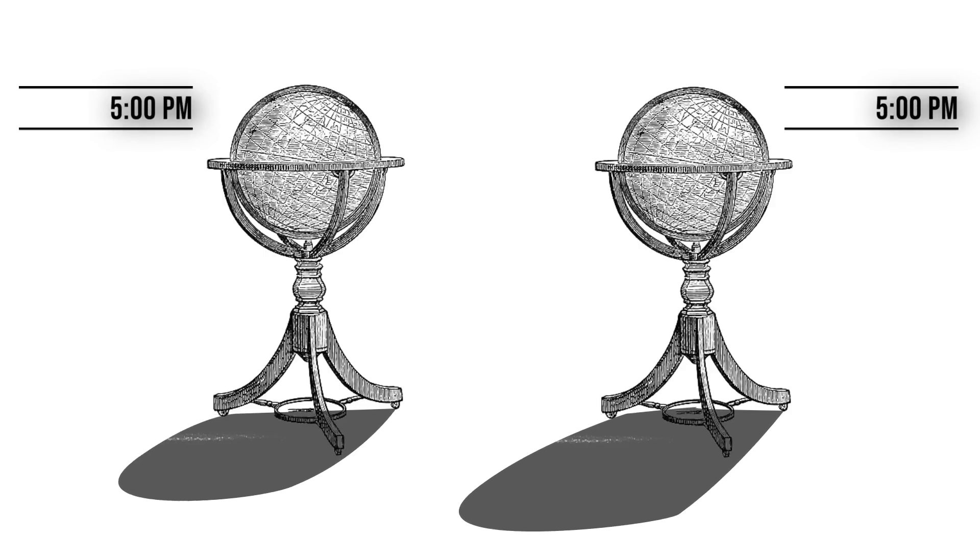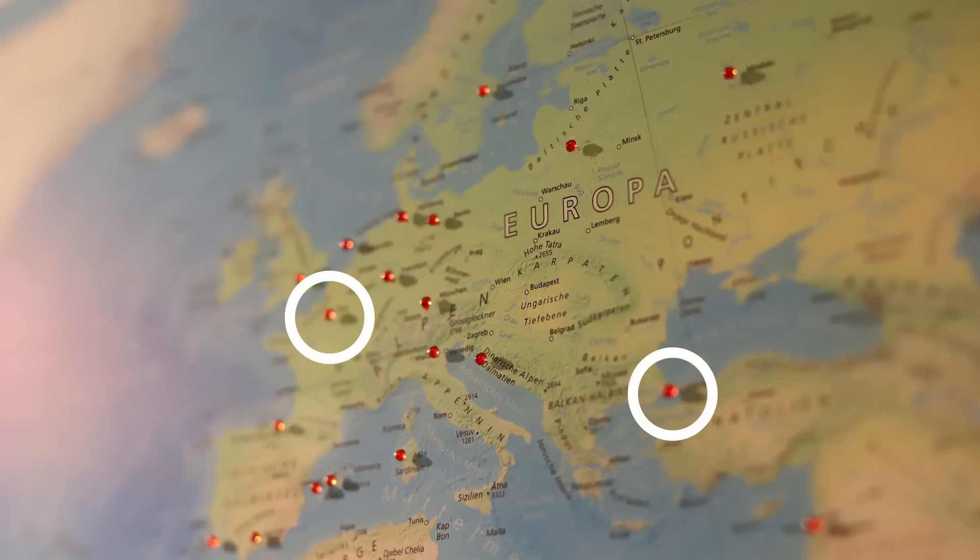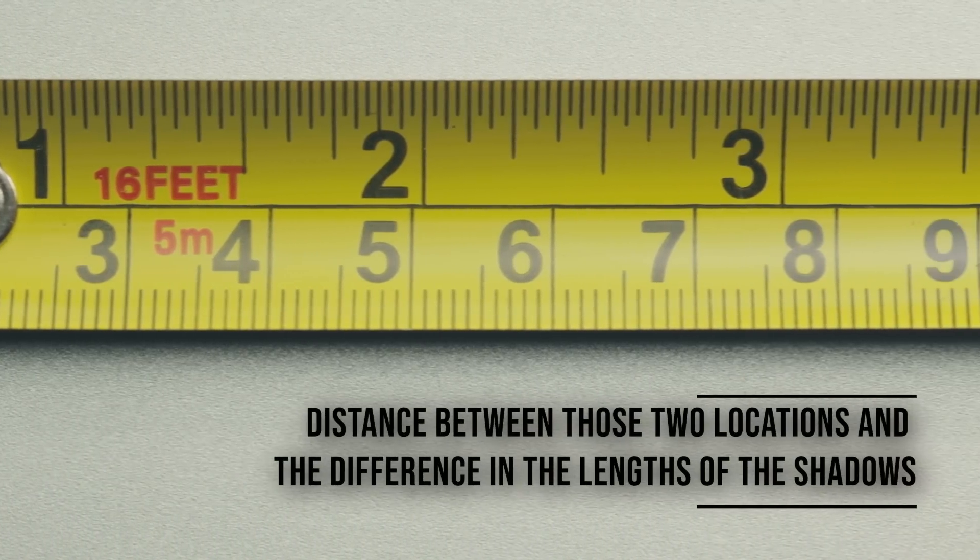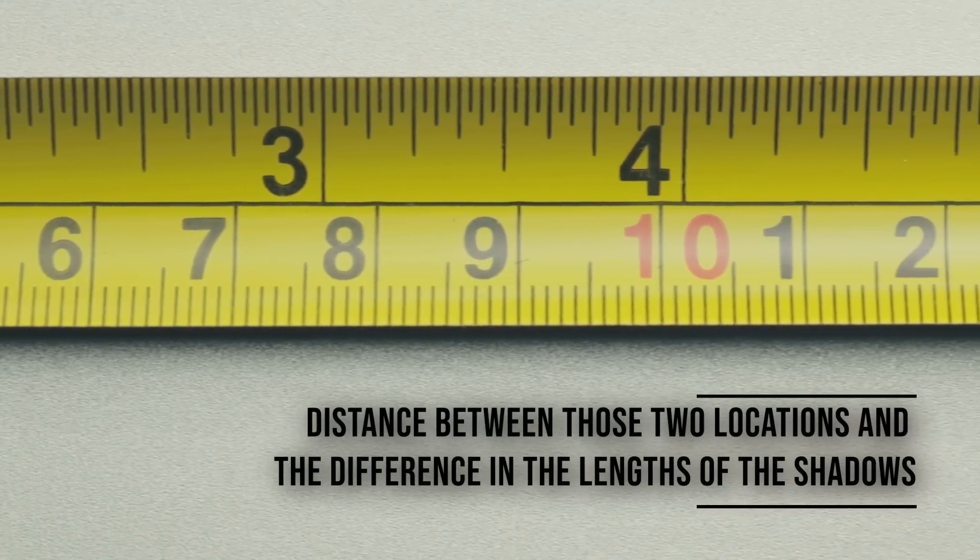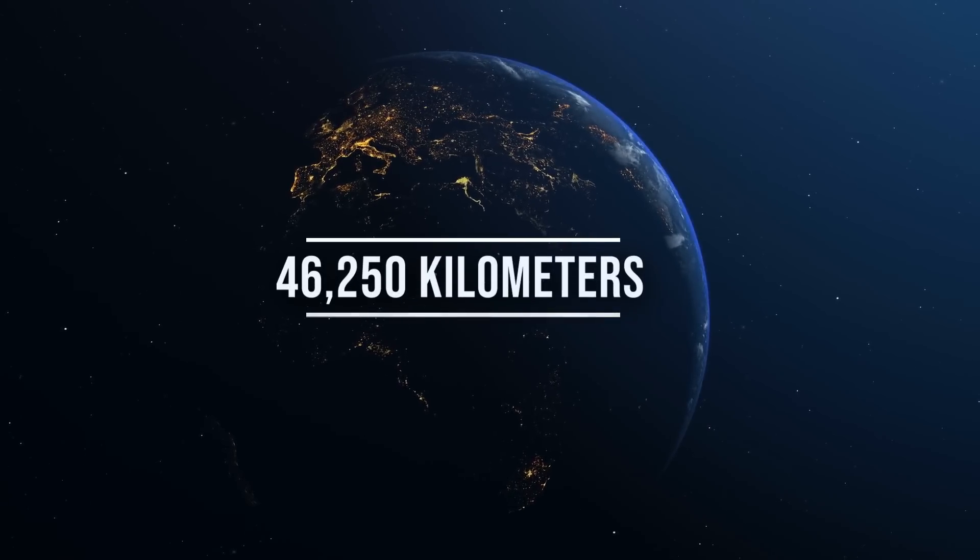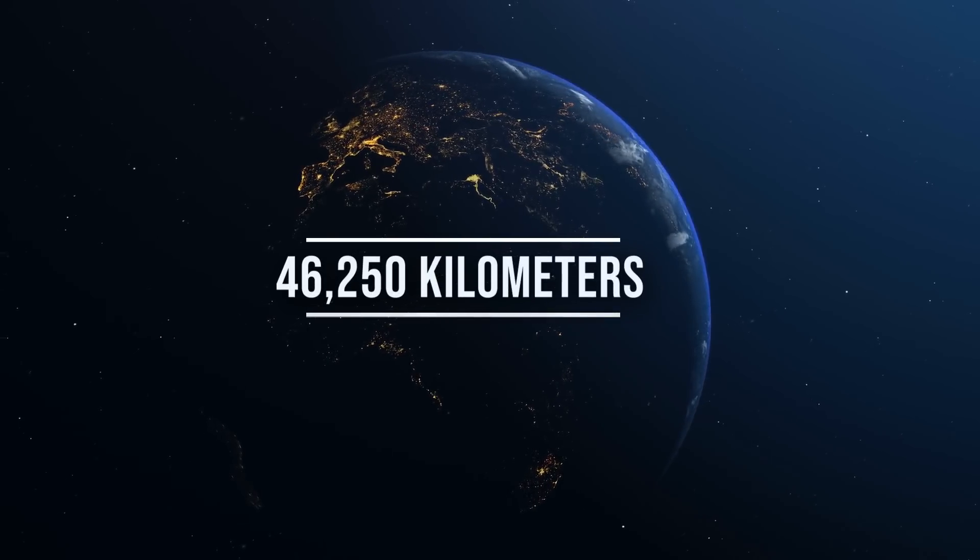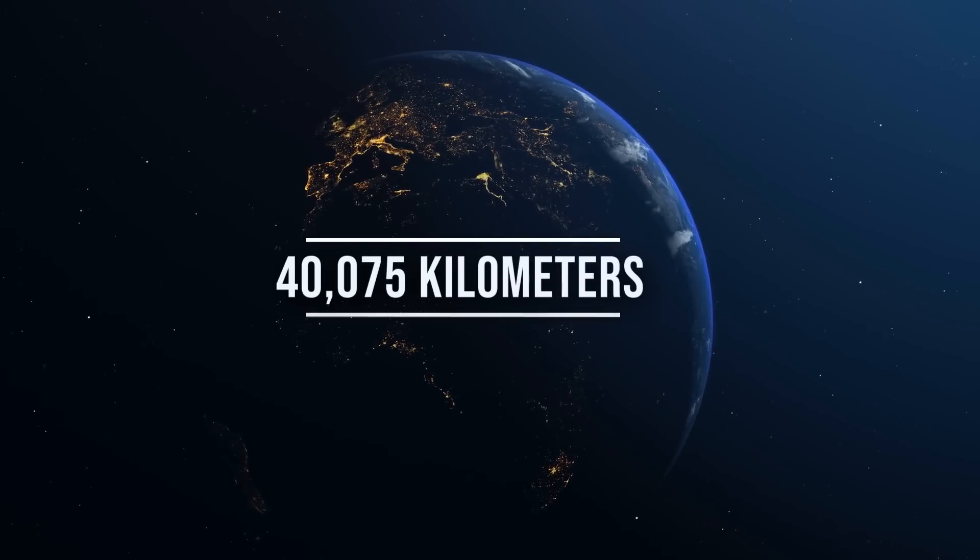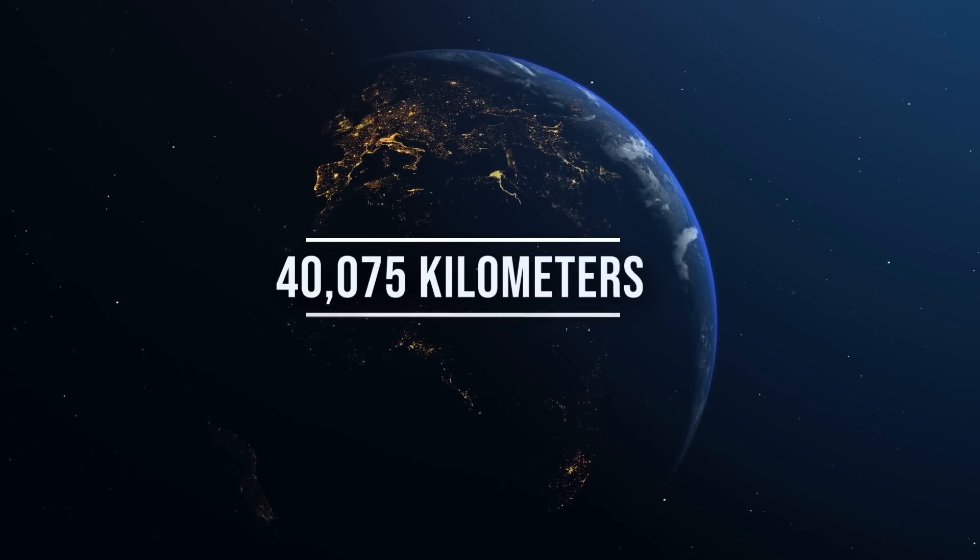These philosophers were even able to calculate the circumference of Earth quite accurately. They did this by measuring the length of the shadow cast by an object at exactly the same time in two different locations. Taking into account the distance between those two locations and the difference in the length of the shadows, they calculated that Earth's circumference was about 46,250 km, that is very close to the real value of 40,075 km.